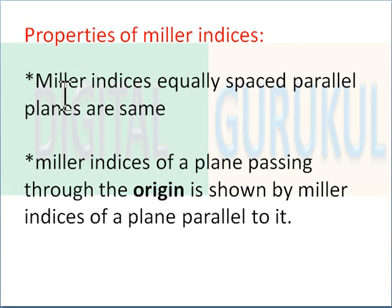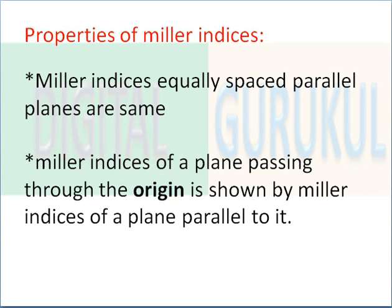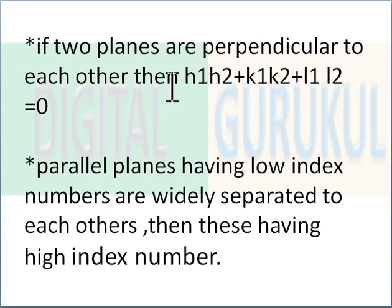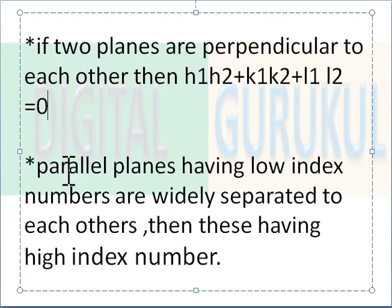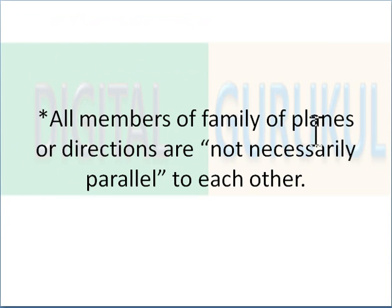The properties of Miller indices are: equally spaced parallel planes have the same Miller indices. Miller indices of a plane passing through the origin are shown by Miller indices of a plane parallel to it. If two planes are perpendicular to each other, then H1·H2 + K1·K2 + L1·L2 = 0. Planes with low index numbers are widely separated compared to those with high index numbers. Also, not all members of a family of planes or directions are necessarily parallel to each other.